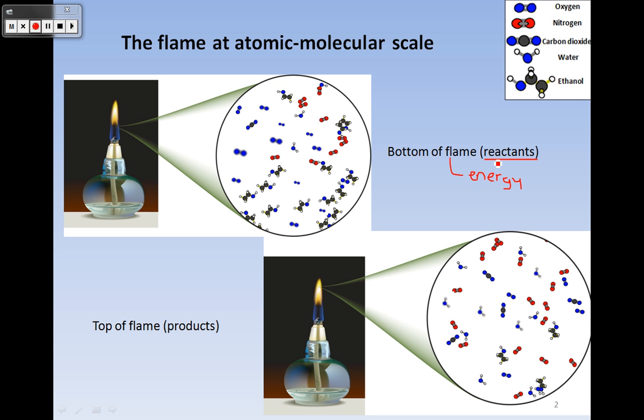So these are the things that are reacting that then one of the results is this flame. And then the same here, the top of the flame, the flame itself again is energy but these are the products coming out of this reaction. And so this is what's called a combustion reaction and we'll look at that later.